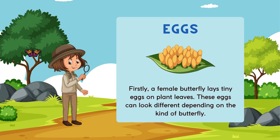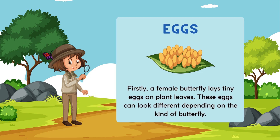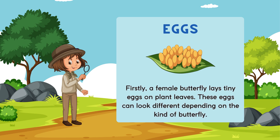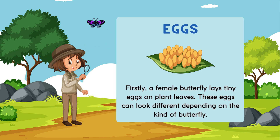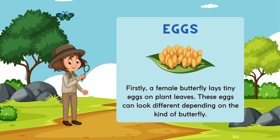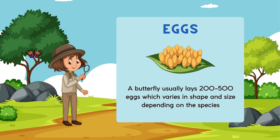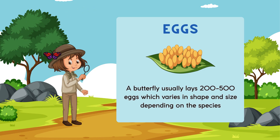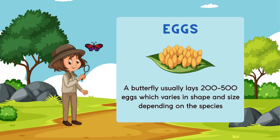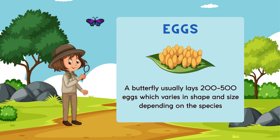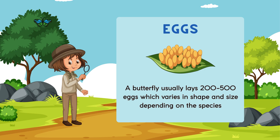Stage number one: A female butterfly lays tiny eggs on plant leaves. These eggs can look different depending on the kind of butterfly. A butterfly usually lays 200 to 500 eggs, which vary in shape and size depending on the species. This stage is known as egg.